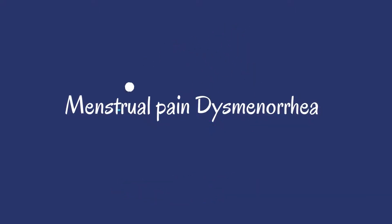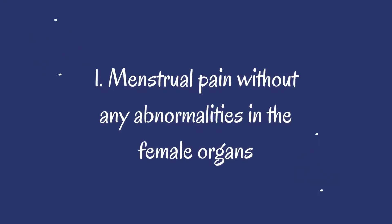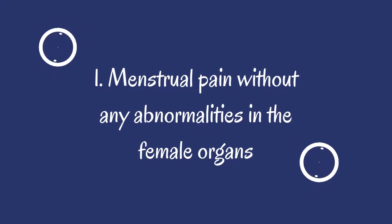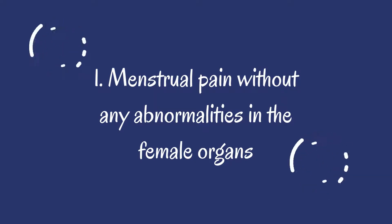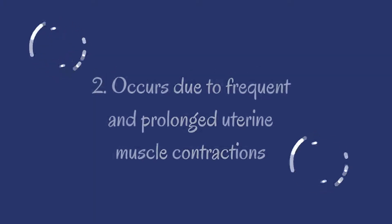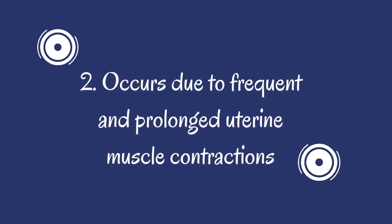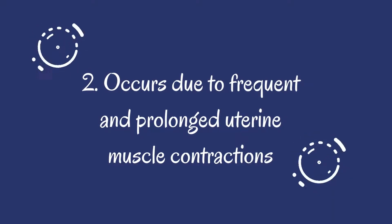Menstrual pain dysmenorrhea refers to menstrual pain without any abnormalities in the female organs. It occurs due to frequent and prolonged uterine muscle contractions.